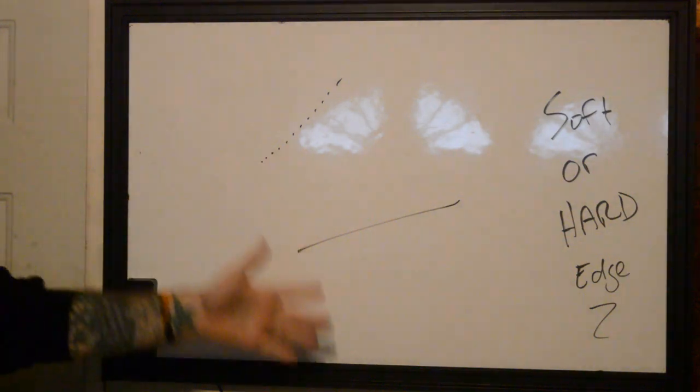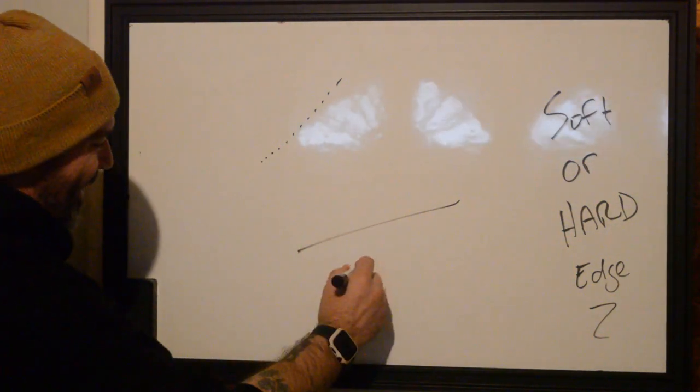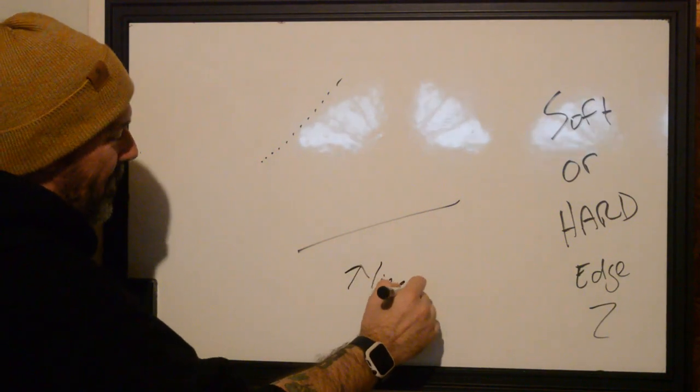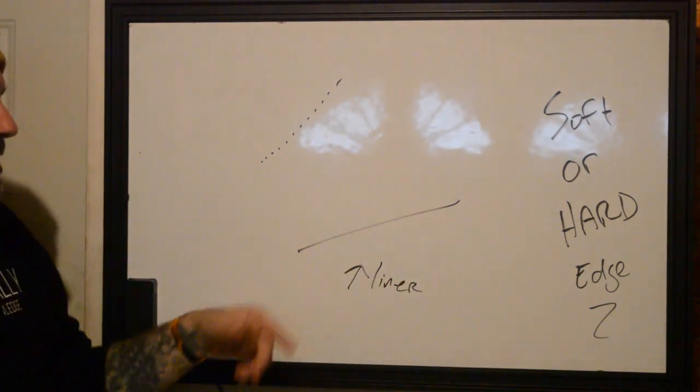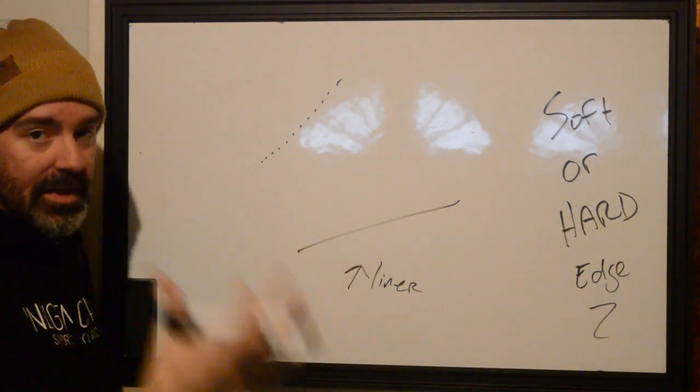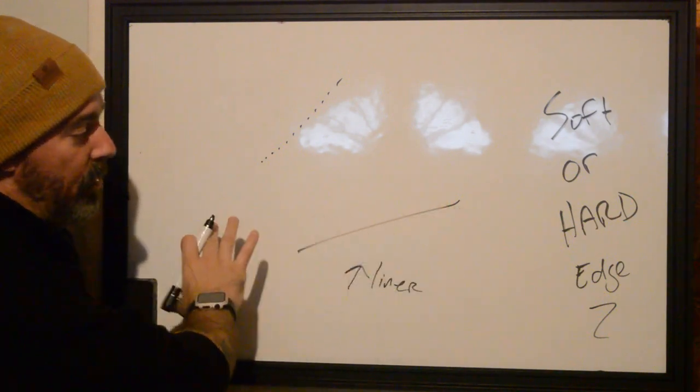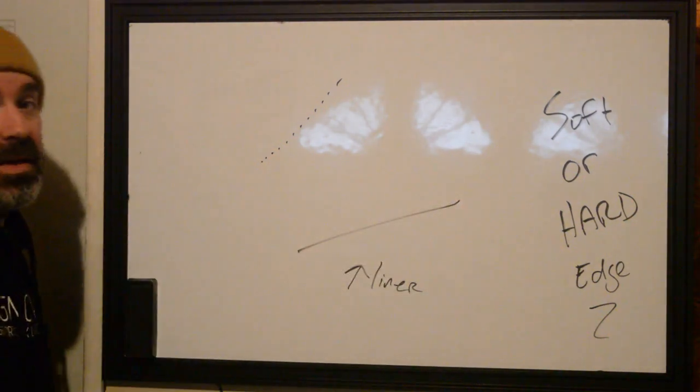So how do we do these? Hard edges are done with liners. Done. That's easy. Really simple. You can also do it with a mag, but usually what's going to happen is whatever type of fill that you're going to have, there's going to be solid saturated, and it usually is going to be cleaned up or touched up with a liner at the end to increase definition.